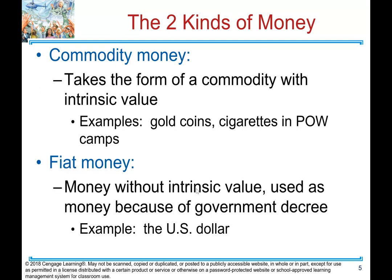There are two kinds of money. One is commodity money and the other is fiat money. Commodity money takes the form of a commodity with intrinsic value — examples are gold coins and cigarettes in POW camps. Fiat money is money without intrinsic value; it's used as money because of government decree. An example is the US dollar.